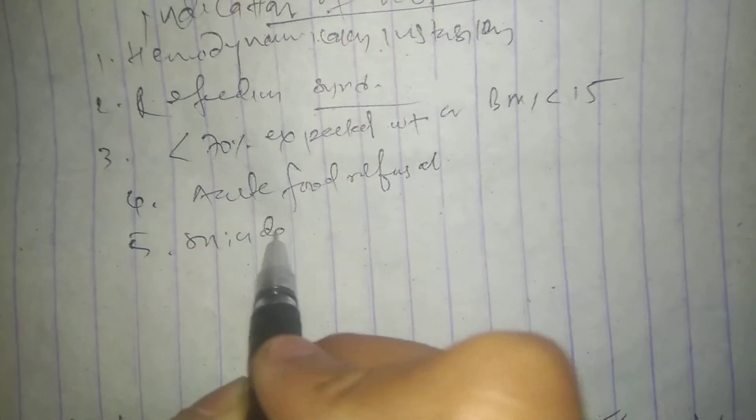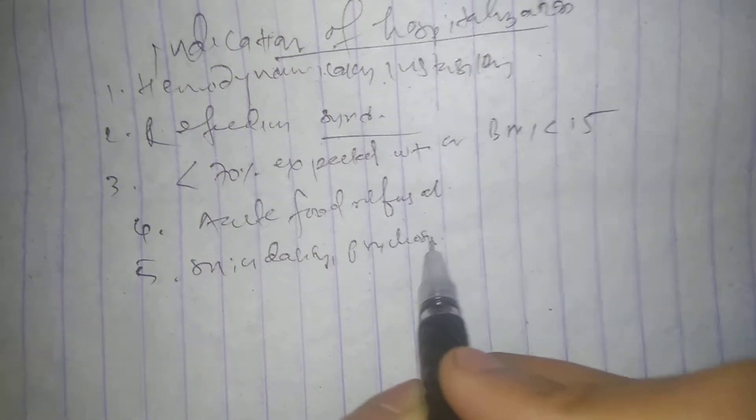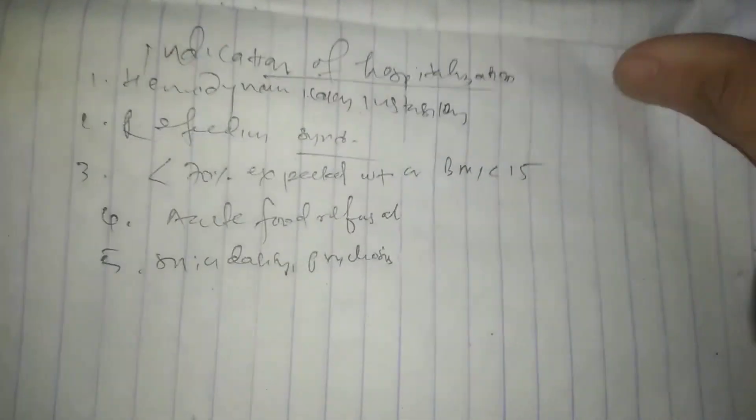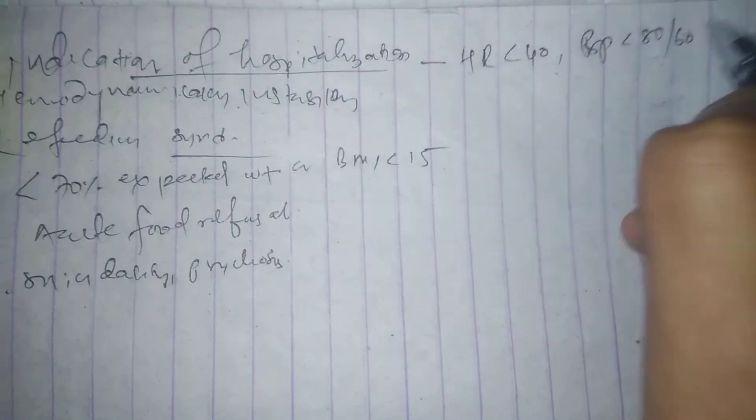Or there is suicidality or psychosis, should be admitted. Okay, so hemodynamic instability - hemodynamically unstable - it means if heart rate is less than 40, if BP is less than 80 by 60...